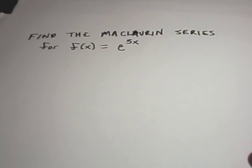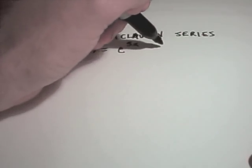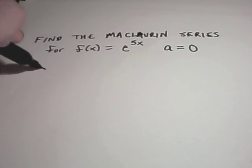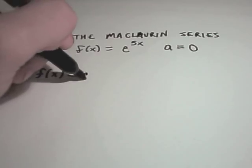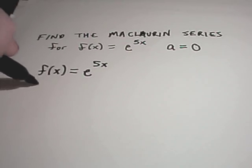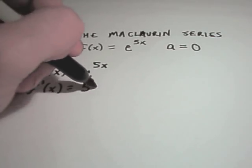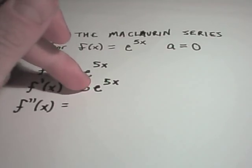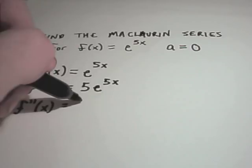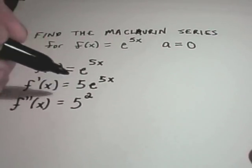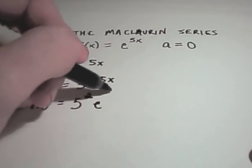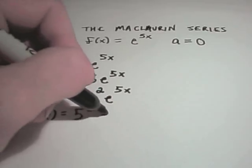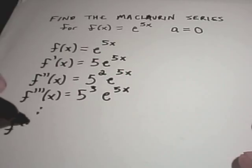Let's do a problem. We're going to find the Maclaurin series for f(x) = e^(5x). A Maclaurin series means we're centering this at a equals 0. We need to calculate derivatives and plug in that value. The first derivative is 5e^(5x), the second derivative is 5 squared times e^(5x) — I recommend not multiplying out so you can see the pattern better — and the third derivative is 5 cubed times e^(5x).